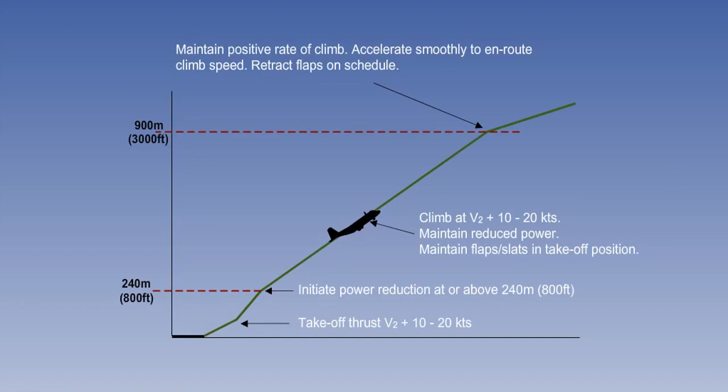The diagram shown on the screen shows a typical noise abatement profile, in which the aim is to alleviate noise close to the aerodrome. After take-off, the aircraft accelerates to V2, plus a safety margin of 10 to 20 knots, and climbs to 800 feet above the airfield.